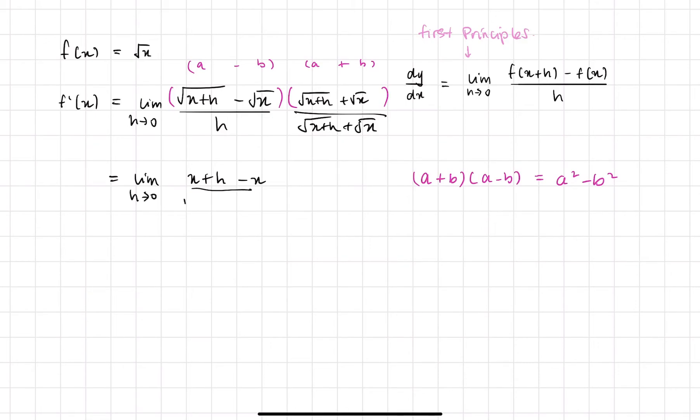All over h. Oops, I should actually write h and this whole thing. Okay, nice. So we can cancel the x's out now. And we have just a lone h and we have an h on the bottom. Let's cancel those two.